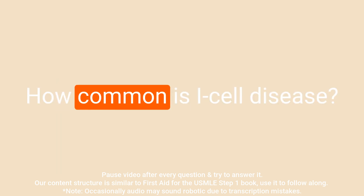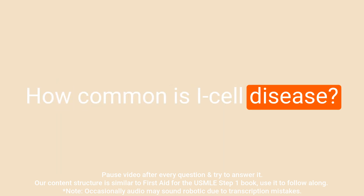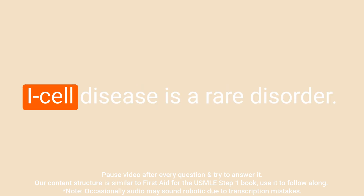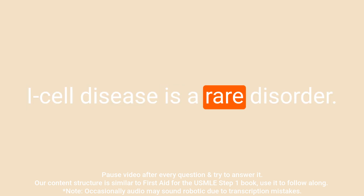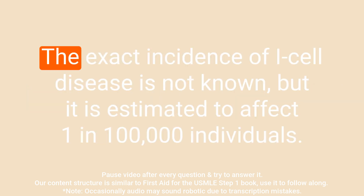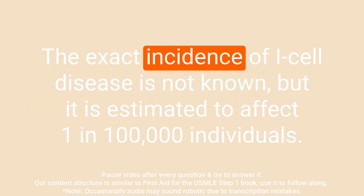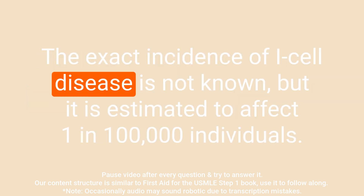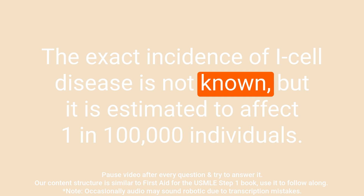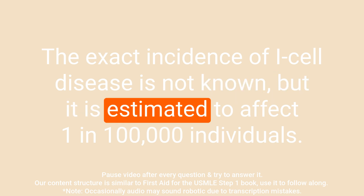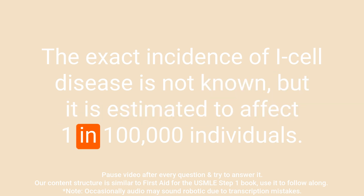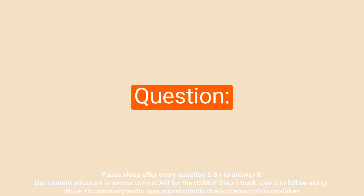Question: How common is I cell disease? Answer: I cell disease is a rare disorder. The exact incidence is not known, but it is estimated to affect one in 100,000 individuals.